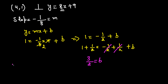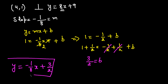Now plug in the slope and b into the standard equation: y = (-1/8)x + 3/2. This is the equation of the line that passes through (4, 1) and is perpendicular to y = 8x + 9.